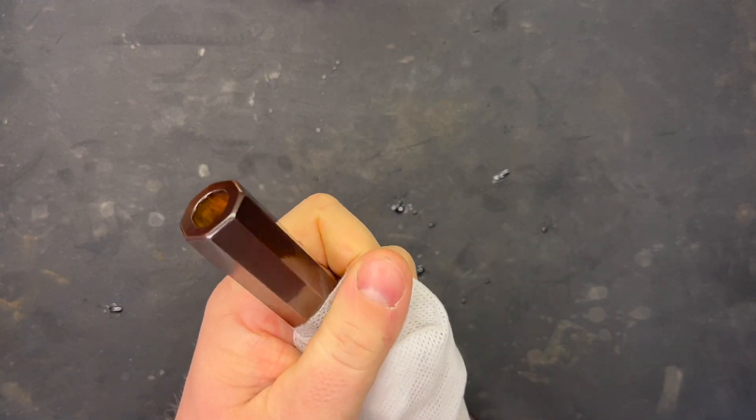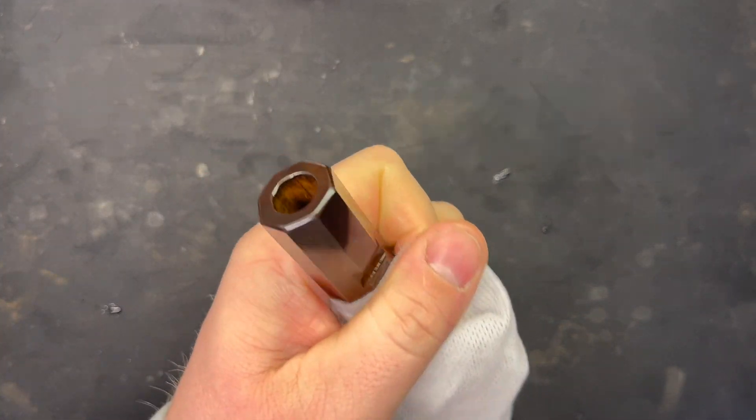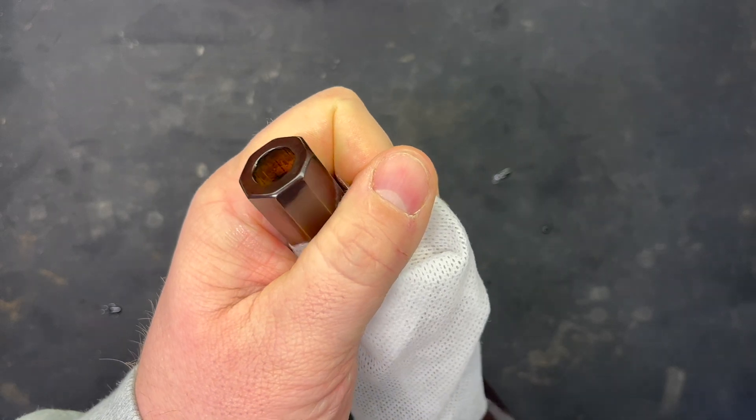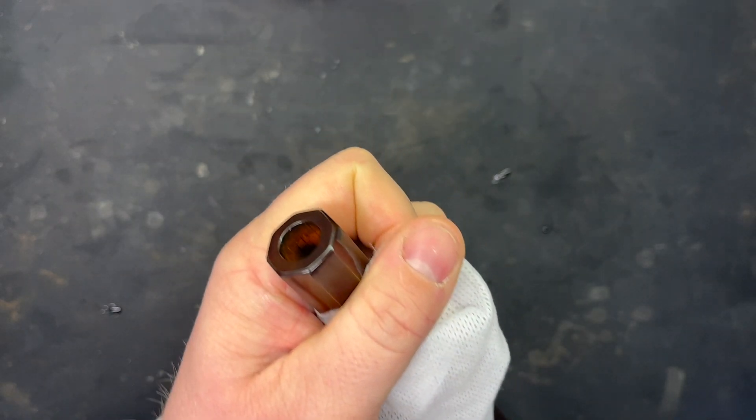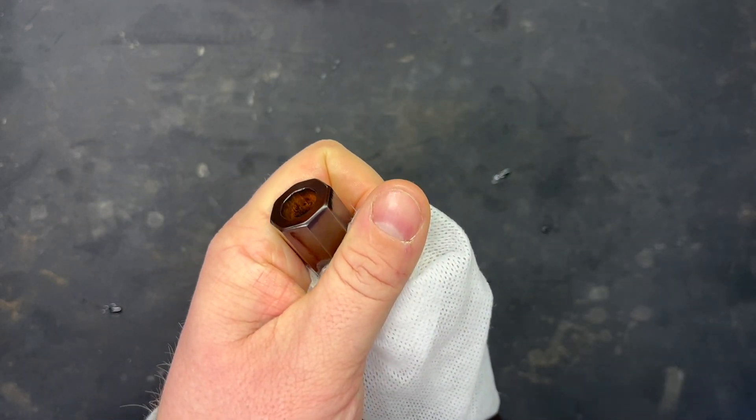The muzzle came out pretty nice. That rust in there is no big deal, it's just from the browning process. I tried to keep it out of there as much as I could, but just some Ballistol and water.